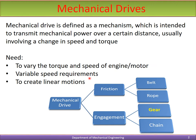In an automobile, first gear, second gear, and third gear have different torque and velocity requirements. A third need is to create linear motions — for example, in a rack and pinion arrangement, rotary motion needs to be converted into linear motion through drive systems. Mechanical drives are classified into friction drives and engagement drives.